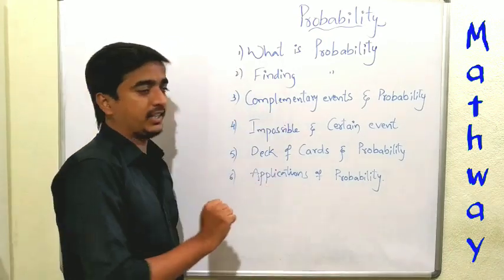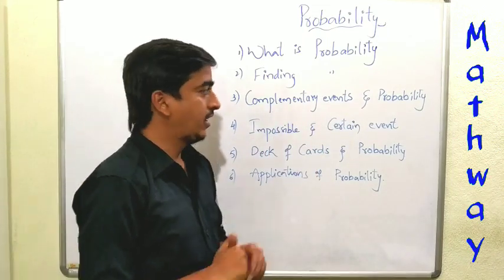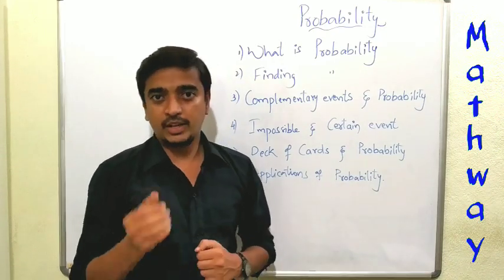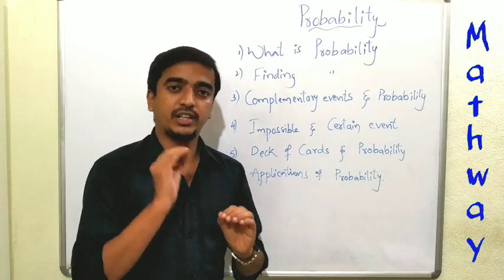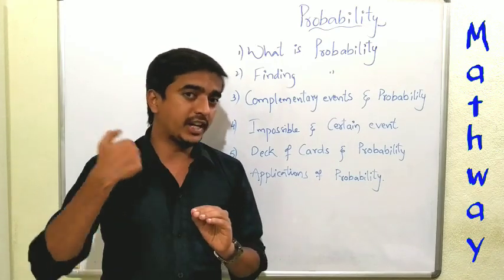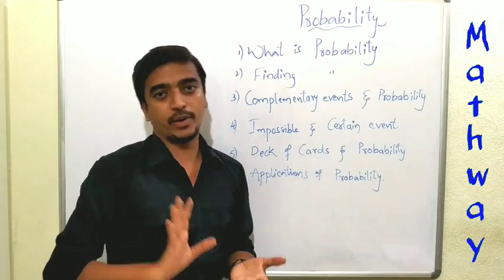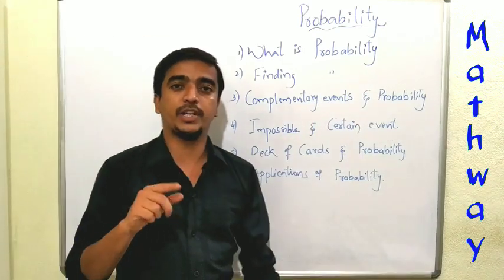Next, complementary events and probability. Complementary events - for example, if you are tossing a coin and we want tails, that is our event. To find that complementary event probability, the formula is P of E plus P of E bar equals to one.